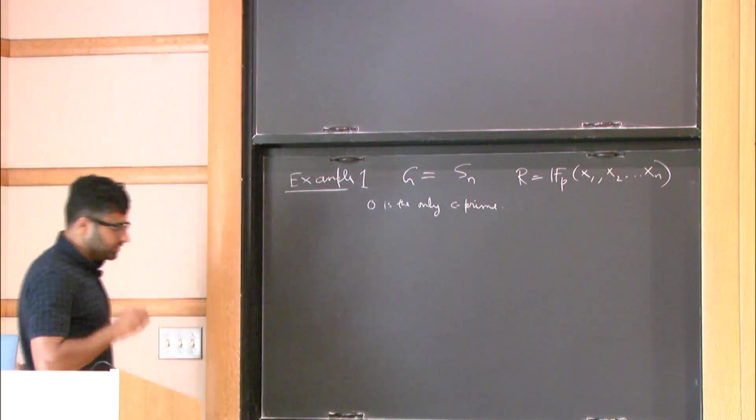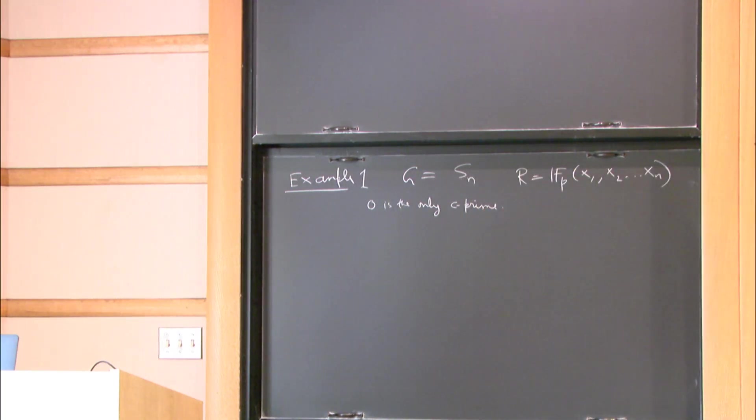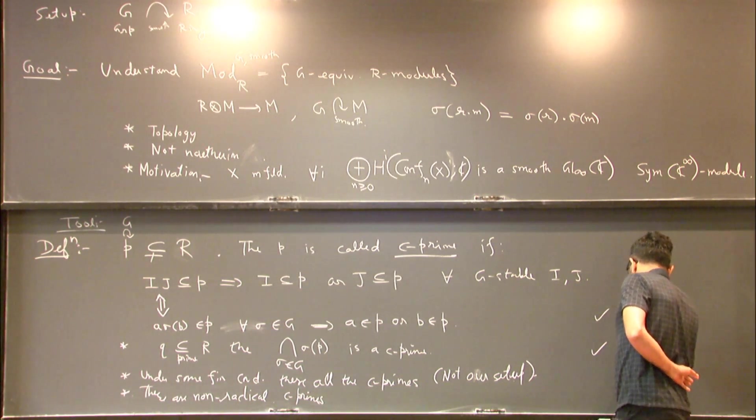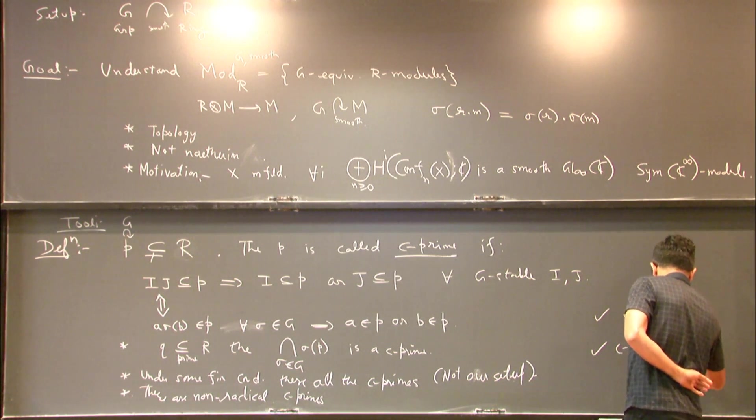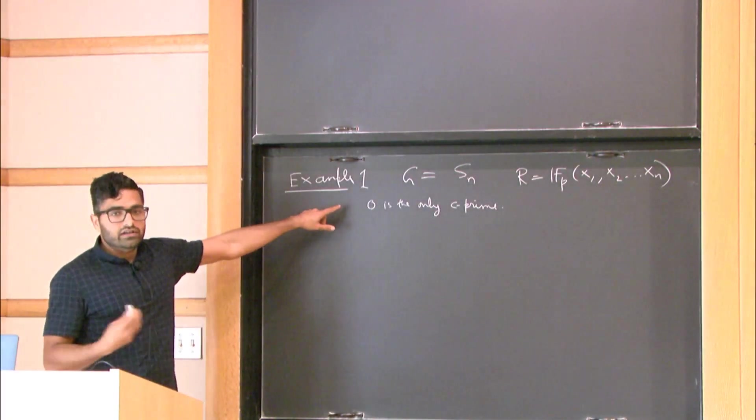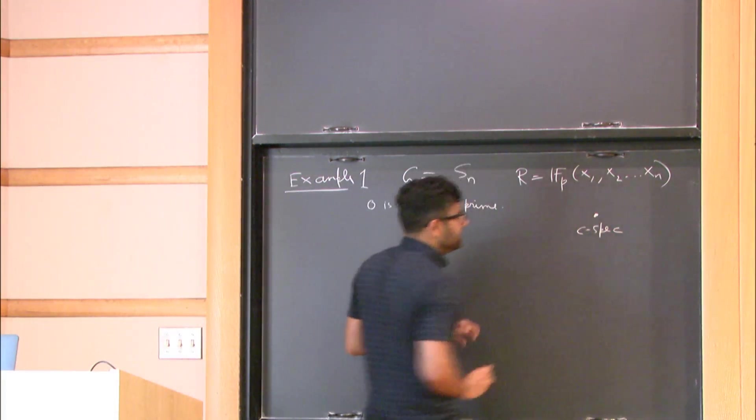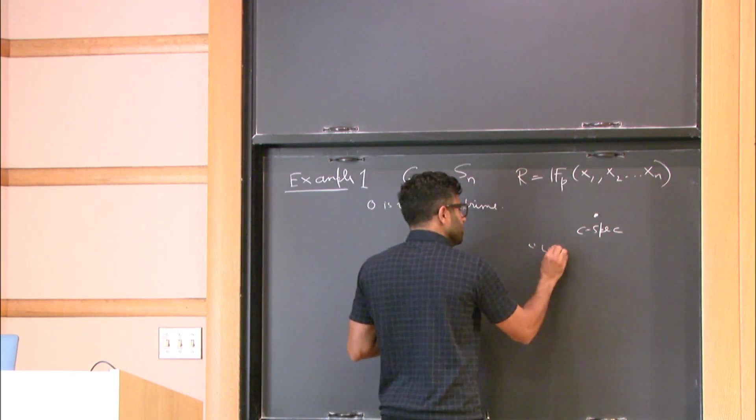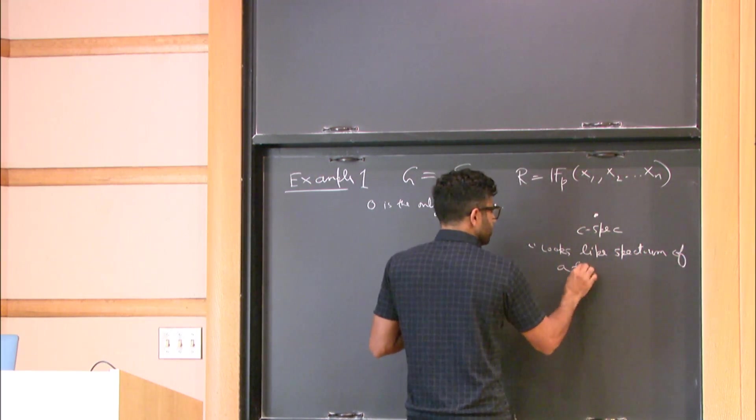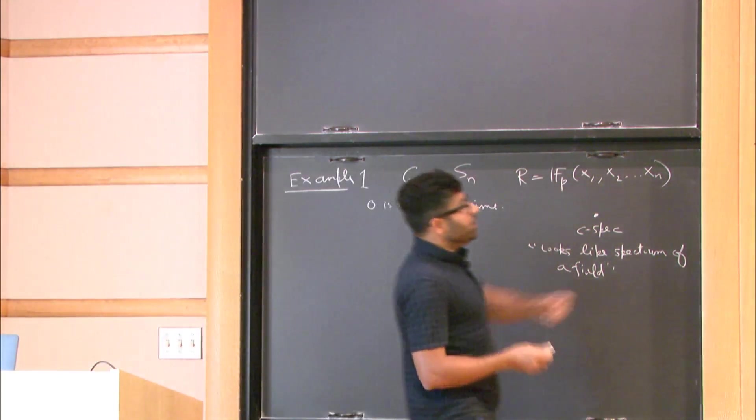Right. So now what can we do with this? So when we have primes, we can talk about the spectrum, which is the set of all primes. So here also we can talk about C spectrum. And we can talk about things like C primary decomposition and things like these. So that is what I'm getting at. So in this case, I have only one C prime. I can describe it C spectrum. It's going to be just a point, because I have only one C prime. So this looks like spectrum of a field. Right. So this looks like spectrum of a field. And in fact, the thing that we care about, category of modules in this case,